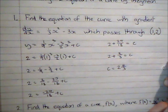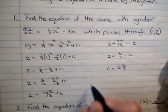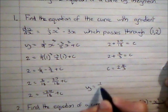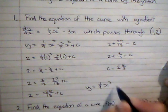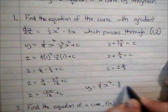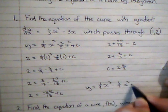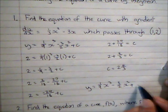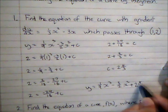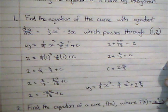Now I've got the value of c, I can write out the equation of the curve in full. So I've got y is a 9th x cubed minus 3 over 2 x squared, and now I can put in my value for c, which I can put down as 2 and 4 thirds.